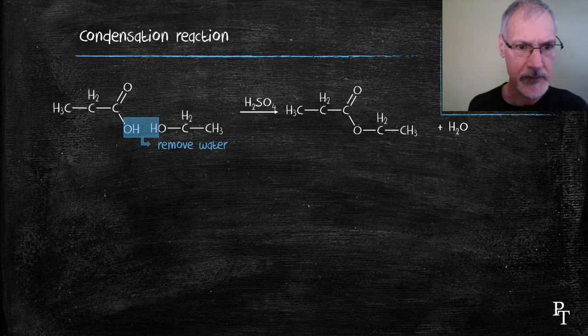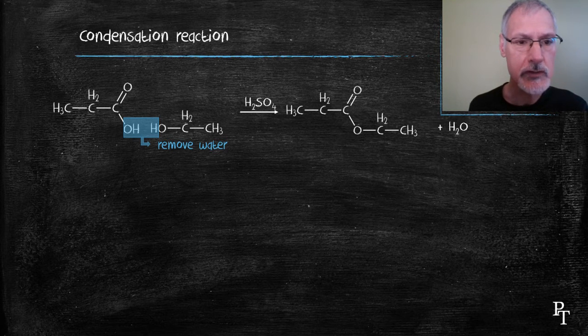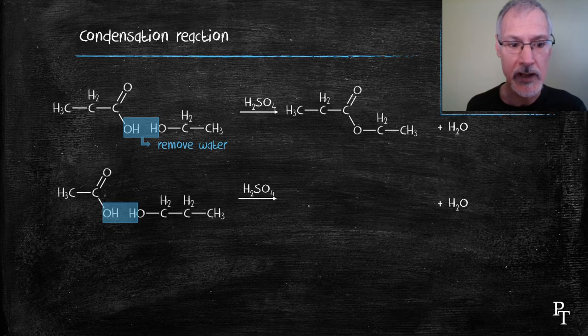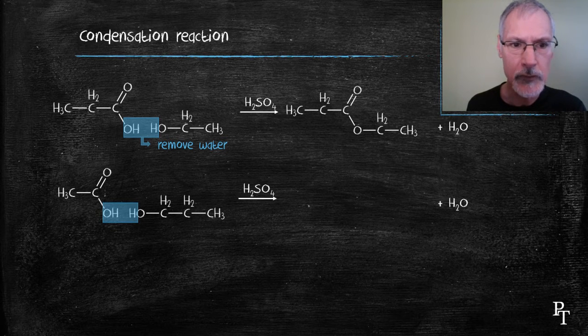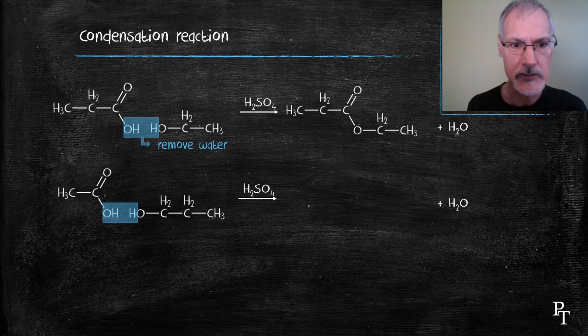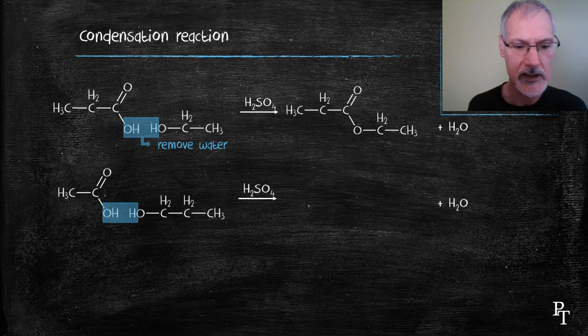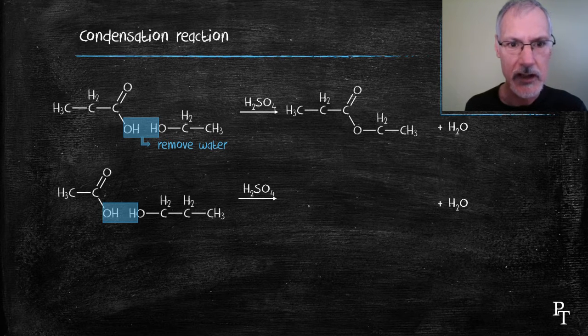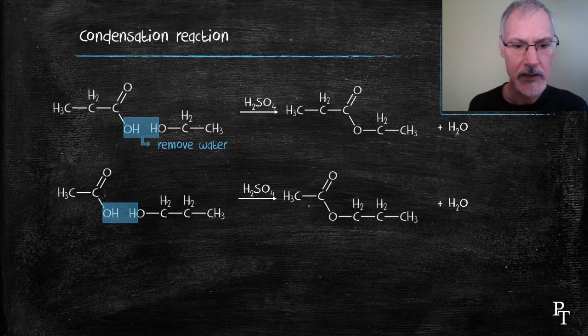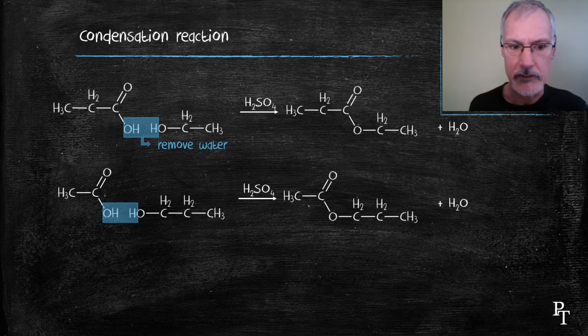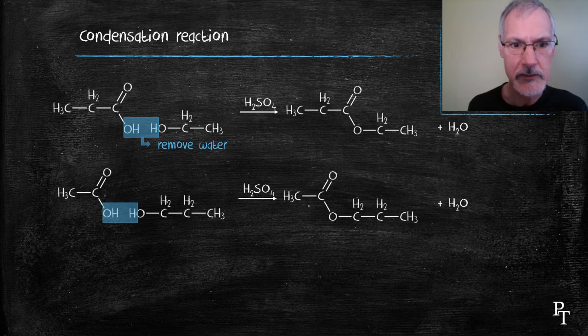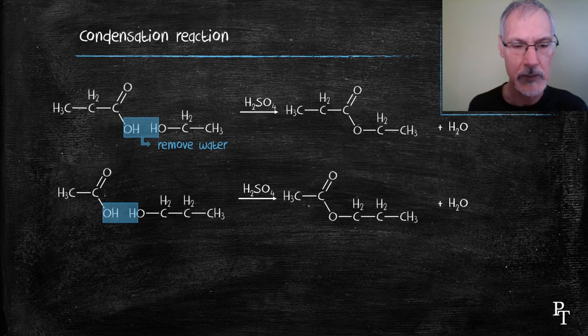Here I'm going to do an isomer of this compound. I'm going to start with a two carbon acid and a three carbon alcohol. Again, I'll remove the water molecule to produce the H2O on the right hand side, the product side. And there's the structure of its corresponding ester. You'll notice it's a different structure. The location of the ester group is slightly different in this second molecule.